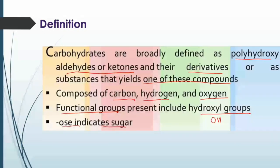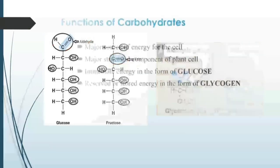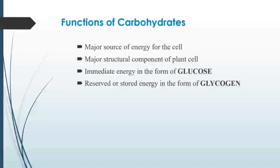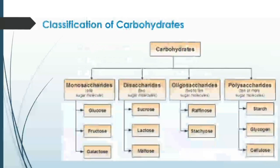C double bond O with H defines an aldehyde group, whereas C double bond O alone defines a ketone group. The functions of carbohydrates include being a major source of energy for the cell and a major structural component of plant cells. We get this energy in the form of glucose, and energy is stored in the form of glycogen.